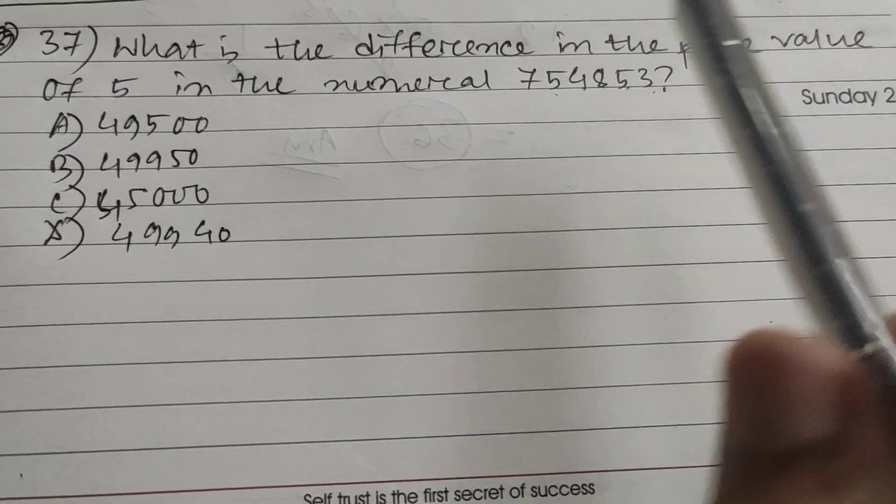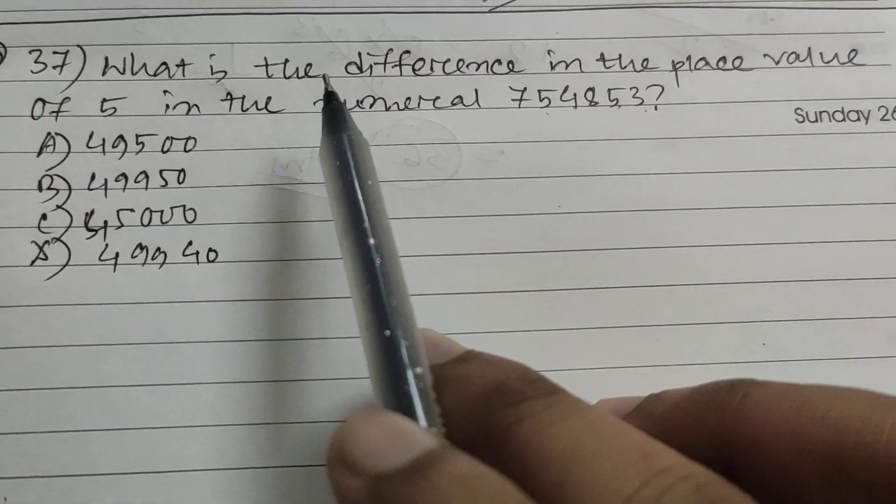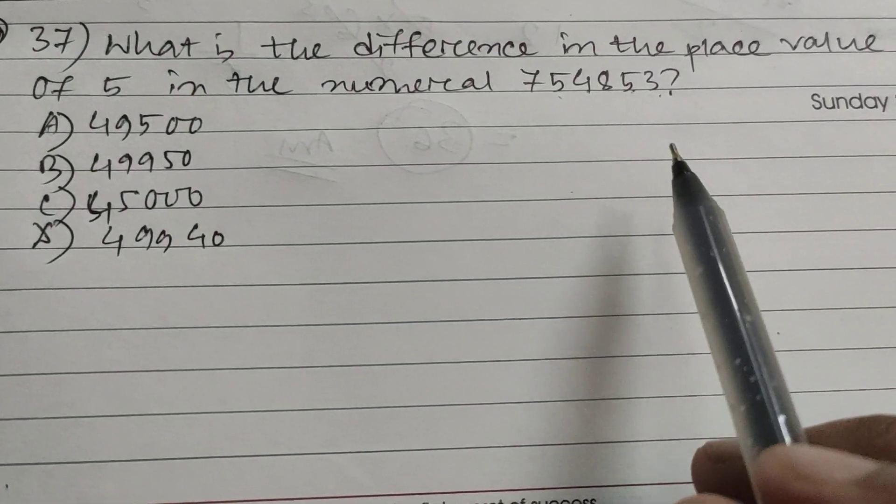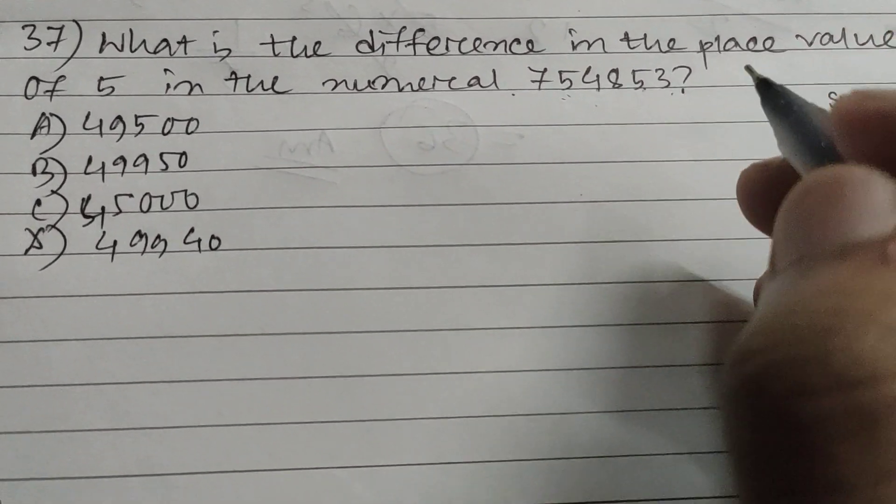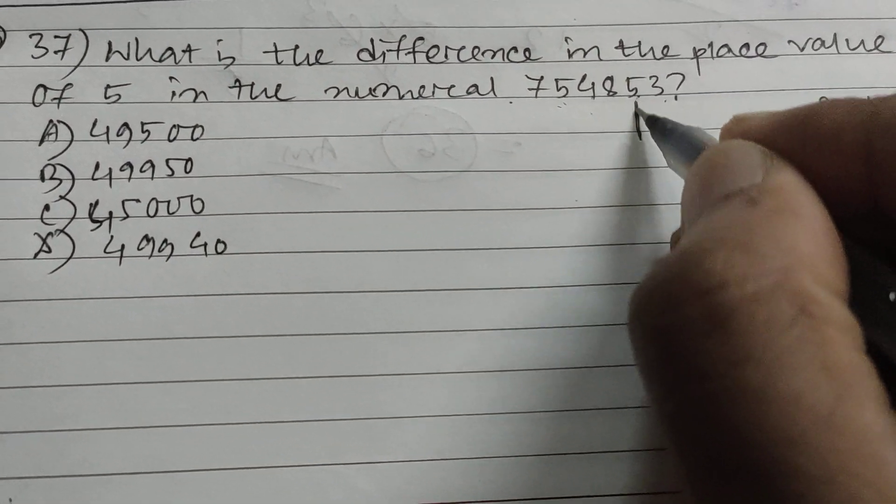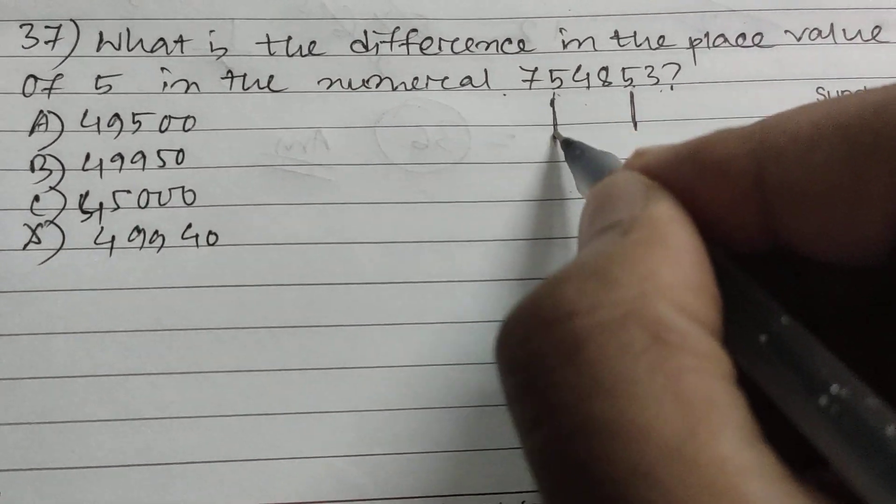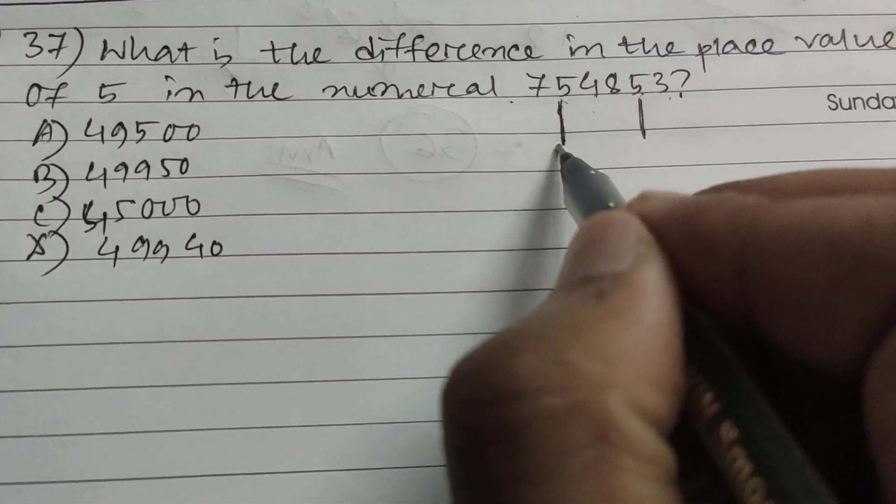Hi friends and students, this is question number 37. What is the difference in the place value of 5 in the numeral 754853? So this is one place, this is another place.